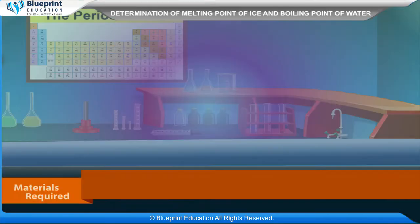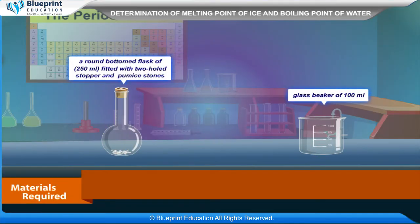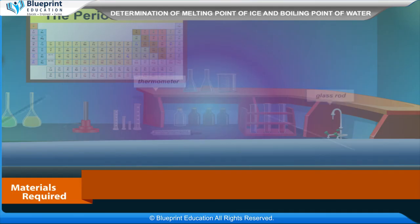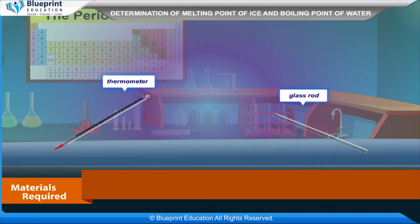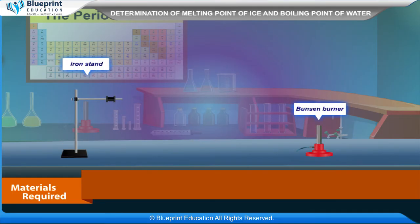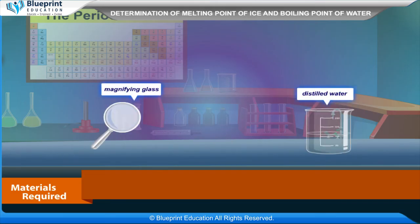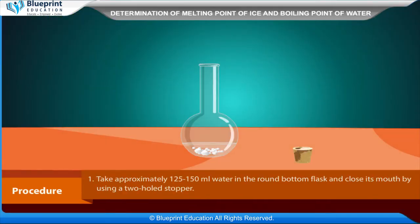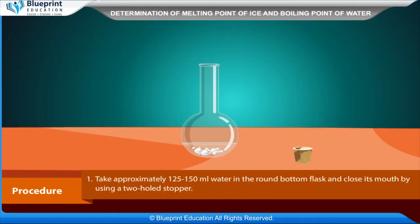To determine the boiling point of water, the materials required are: a round-bottomed flask of 250 ml fitted with a two-hole stopper and pumice stones, a glass beaker of 100 ml, a wire gauze, a tripod stand, a thermometer, a glass rod, an iron stand, a Bunsen burner, a magnifying glass, distilled water, stopwatch, and pumice stone pieces.